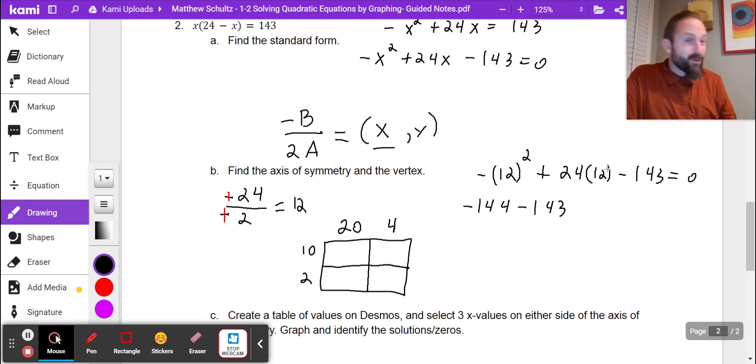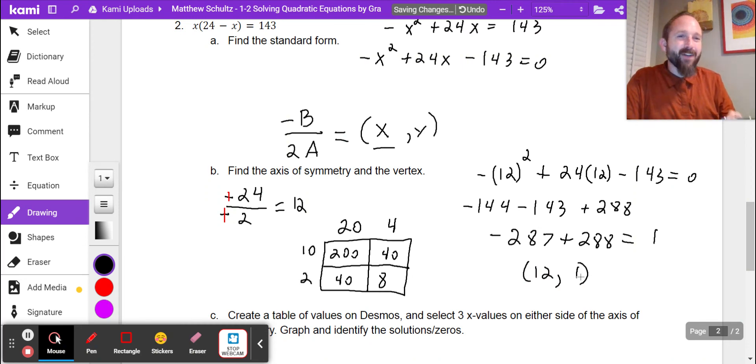So I broke up the two numbers, 24 and 12, into two parts. 10 and 2 and 20 and 4. So 10 times 20 is 200, 10 times 4 is 40, 20 times 2 is 40, and 2 times 4 is 8. So if I add all these up, I get plus 288. Hey wait a second here. Negative 144 plus negative 144 would be 288, but this is negative 287 plus 288, which would be positive 1. So at 12, the vertex is at 12 comma 1.